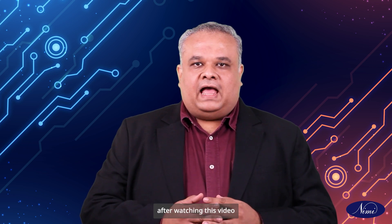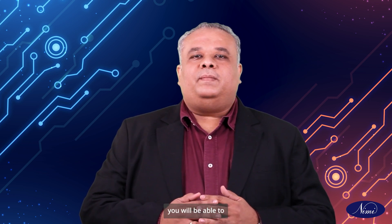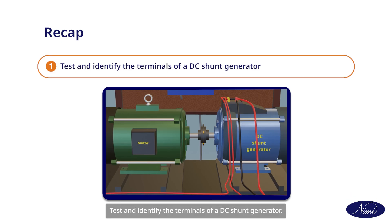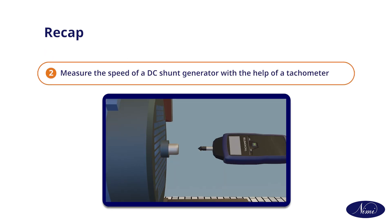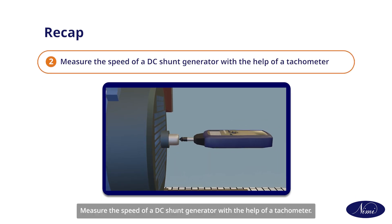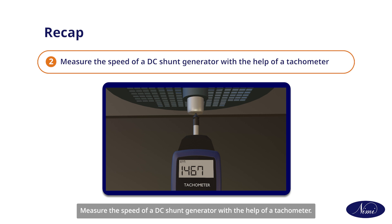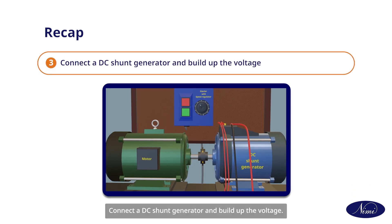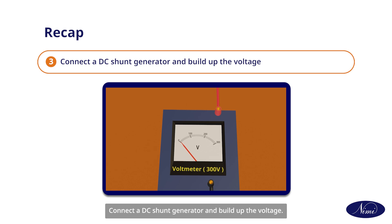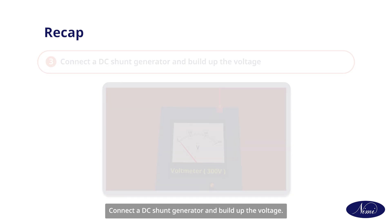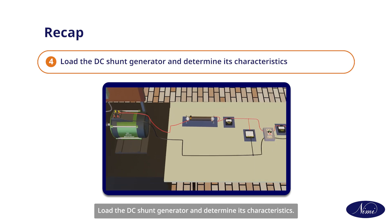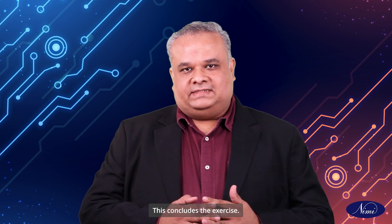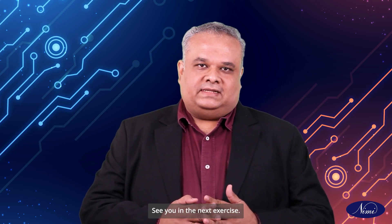I hope after watching this video, you will be able to test and identify the terminals of a DC shunt generator, measure the speed of a DC shunt generator with the help of a tachometer, connect a DC shunt generator and build up the voltage, and load the DC shunt generator and determine its characteristics. This concludes the exercise. See you in the next exercise.